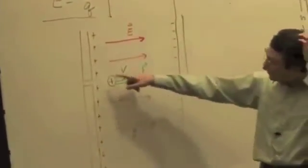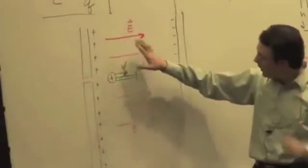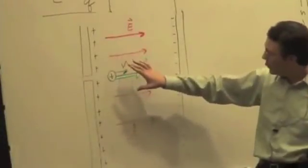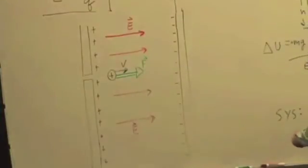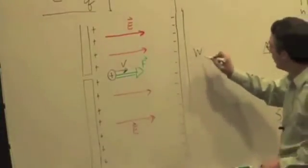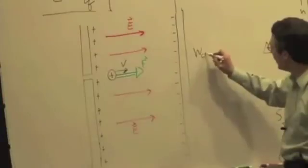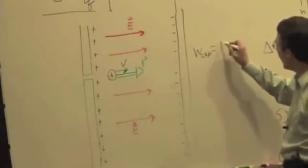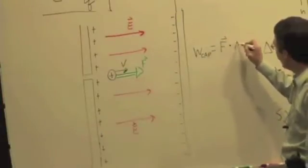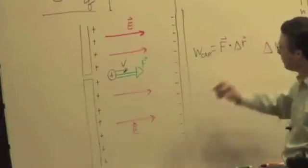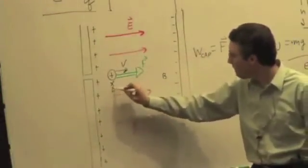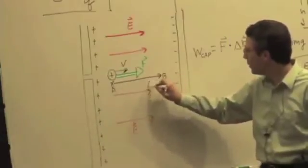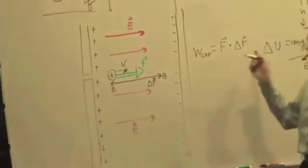So just focusing on the proton, the field is going to do what sign of work? The work is going to be, if I say the work done by the capacitor or done by the electric field due to the capacitor, is F dot delta R, and delta R is from A to B, right?